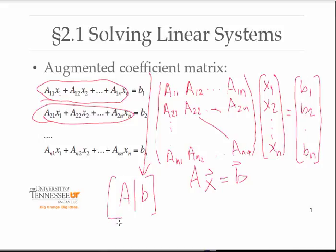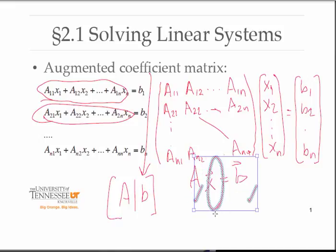This augmented coefficient matrix is what we'll use to mechanically solve the linear system. When we say solving the linear system, the A's are known, the B's are known — what we're trying to figure out is the linear combination of the A's that will give the corresponding B's. The unknowns x1 through xn are not known, and that's the goal. Finding this vector x is what we call solving the linear system.